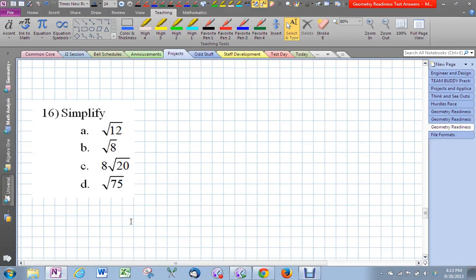Okay, let's continue on and finish up our geometry readiness test. So we have four little problems here to simplify, and these are all radicals that could be simplified.